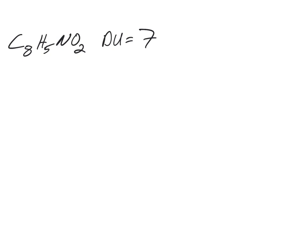So this is workshop number 6, problem number 1 from unit 4. First things first, C8H5NO2, we calculate degrees of unsaturation, right? And that should be 7.